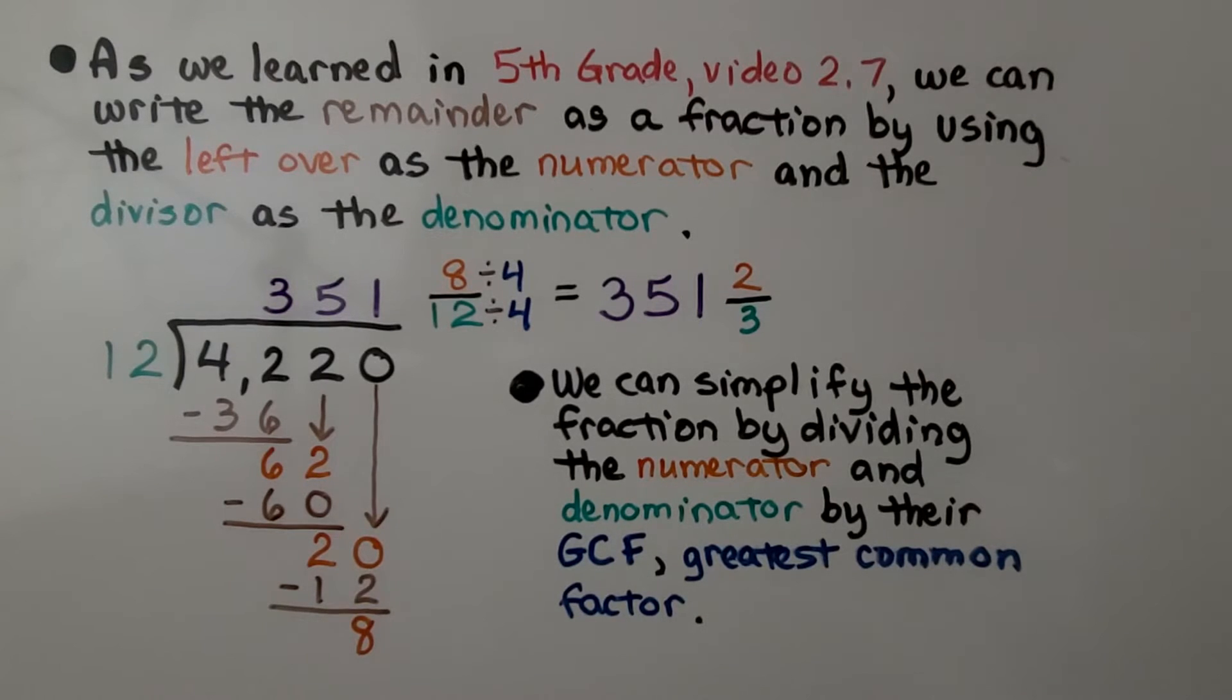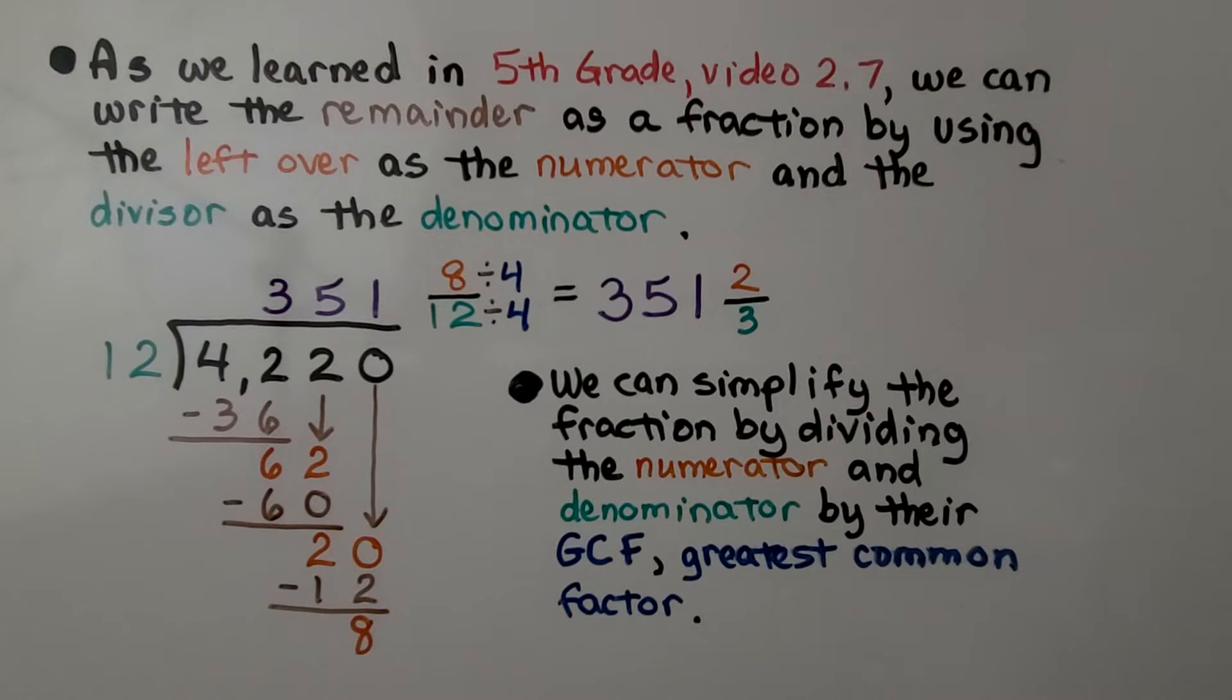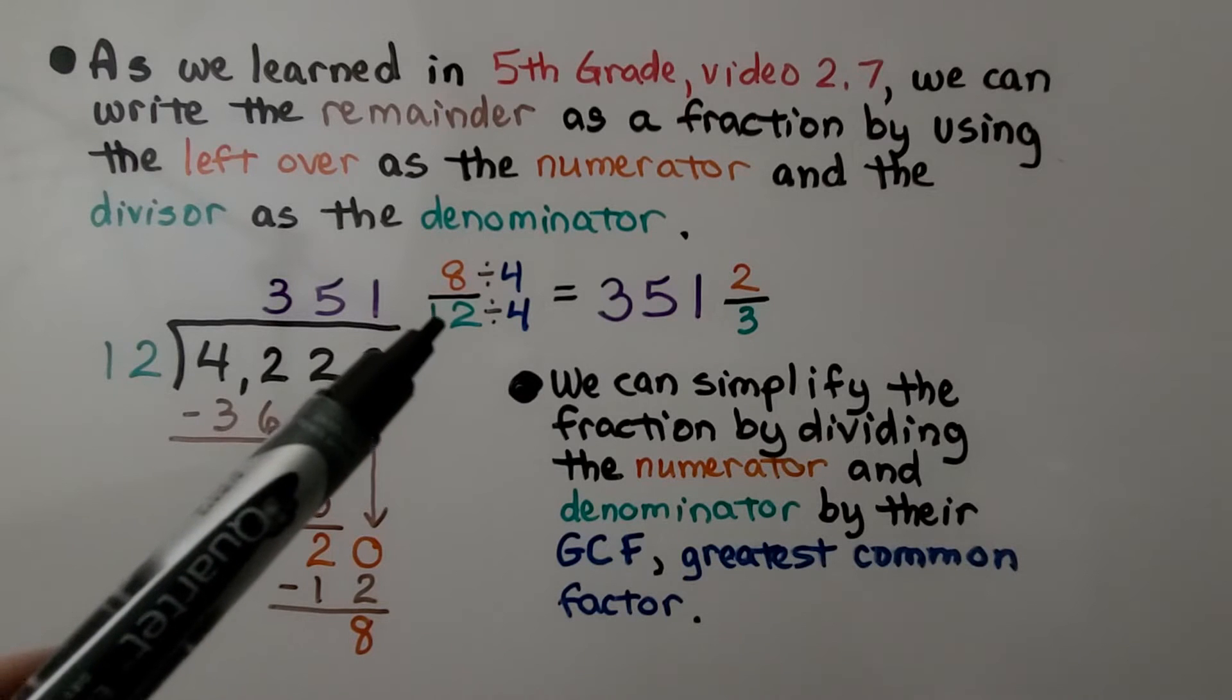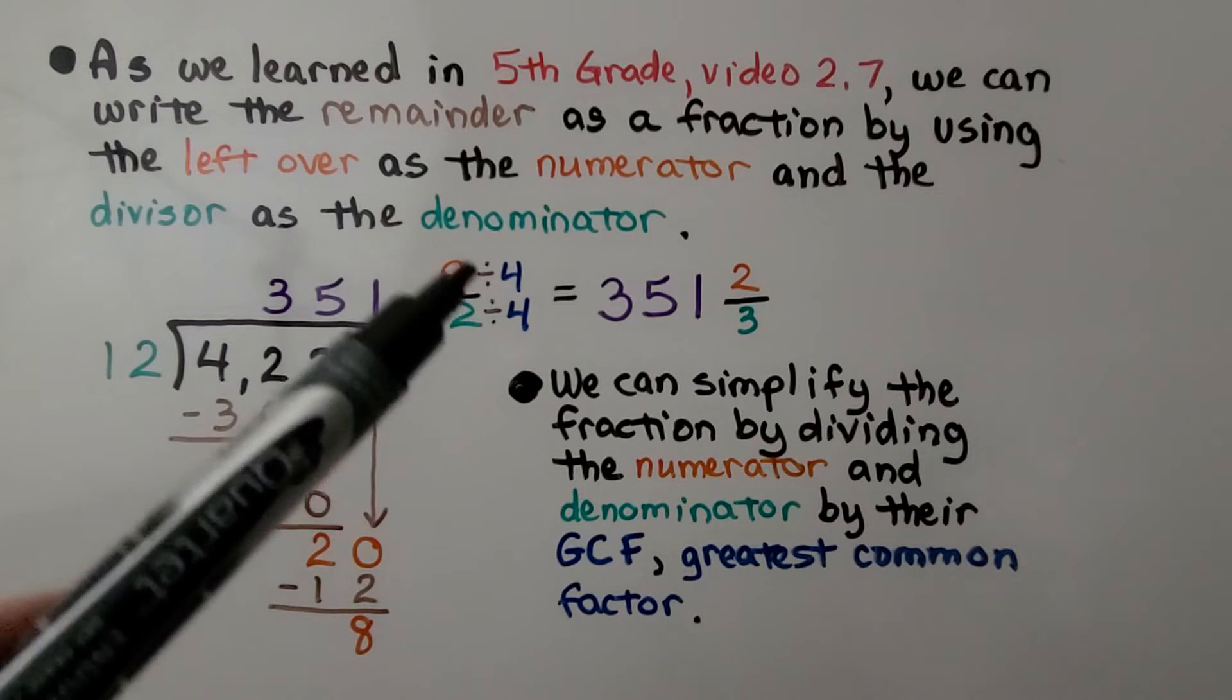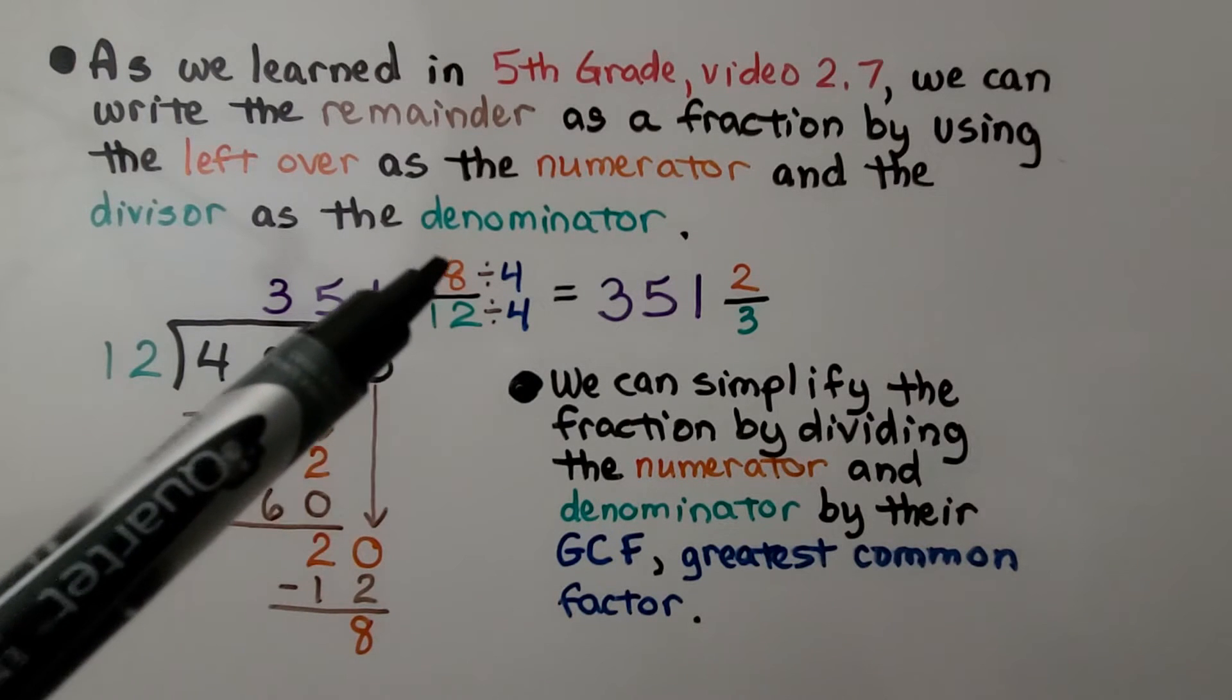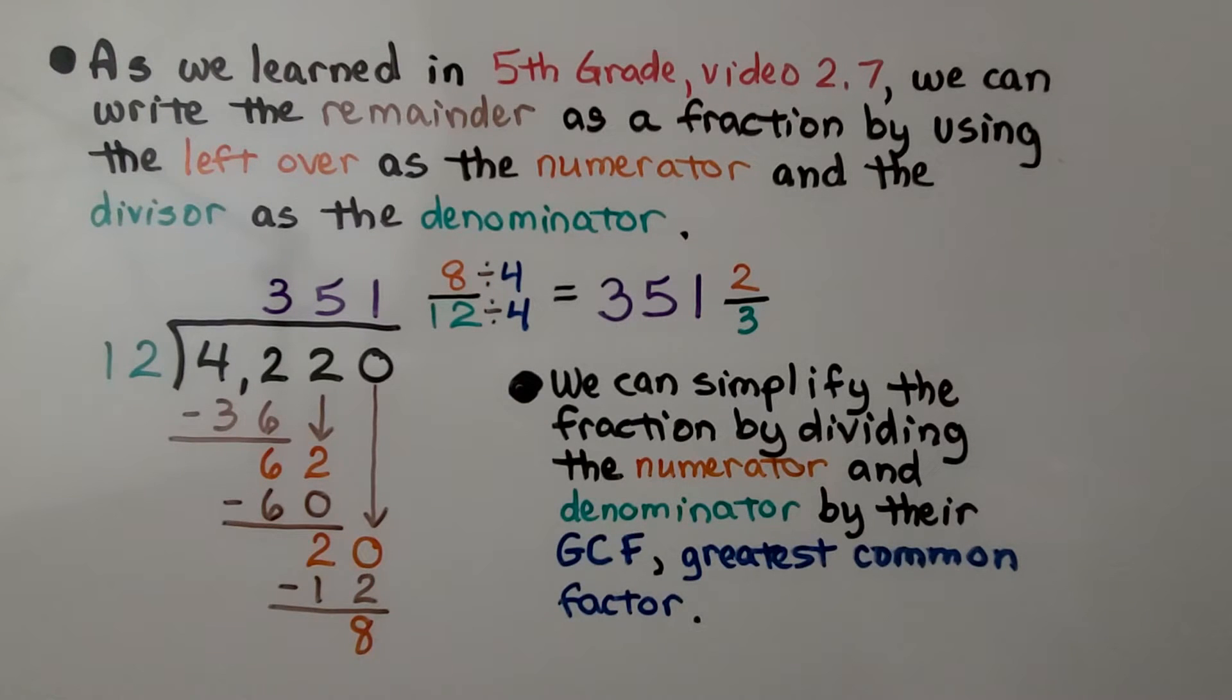As we learned in 5th grade math video 2.7, we can write the remainder as a fraction by using the left over as the numerator and the divisor as the denominator. So we would have 351 and 8 twelfths. We can simplify the fraction by dividing the numerator and denominator by their GCF, their greatest common factor. We can use 4 and 8 divided by 4 is 2, 12 divided by 4 is 3. It simplifies to 351 and 2 thirds.